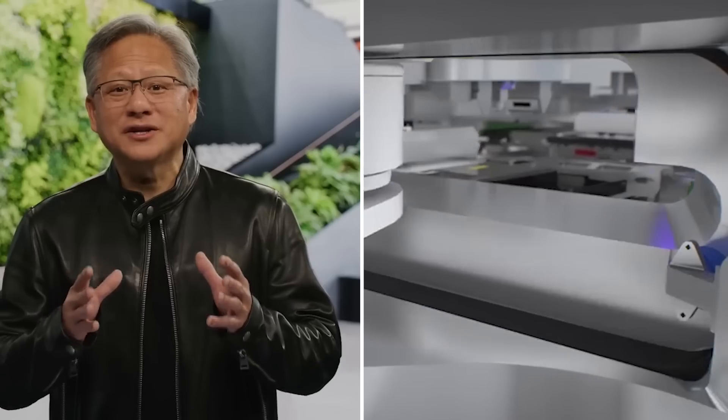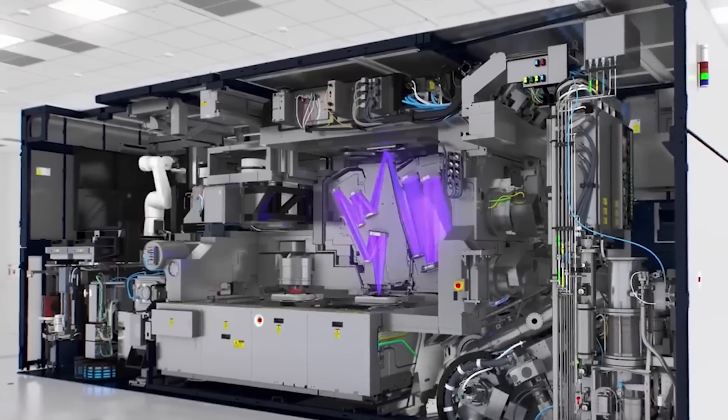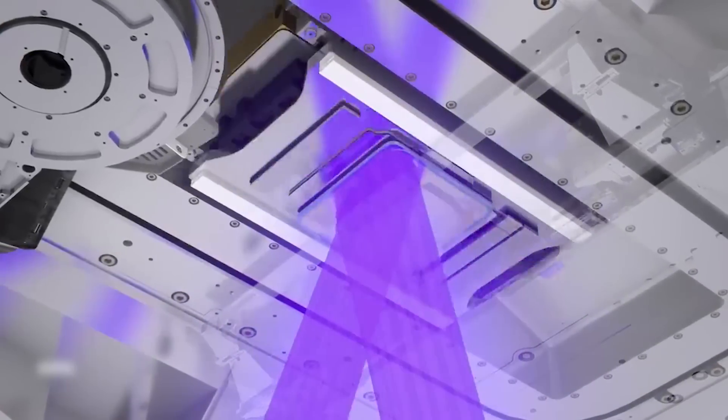Computational lithography is a process that helps figure out the design of each mask. These masks are used in making chips, like the H100 chip, which needs 89 different masks.